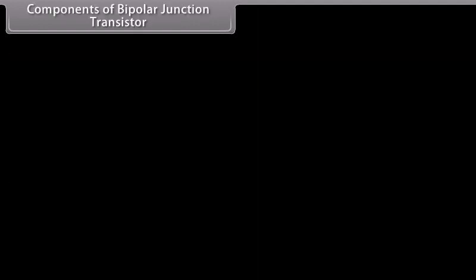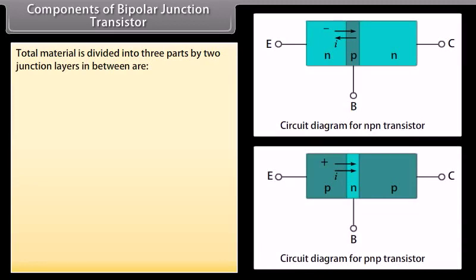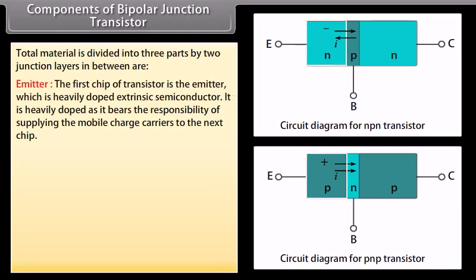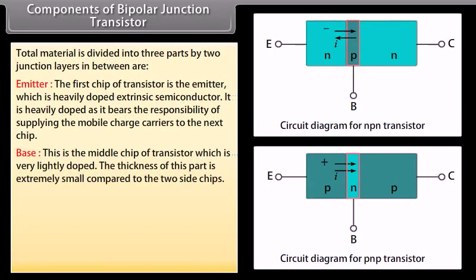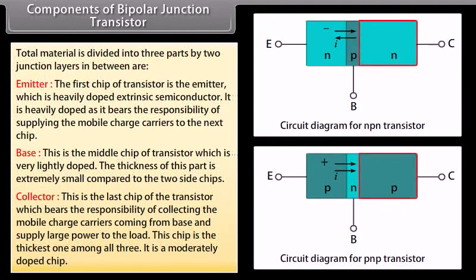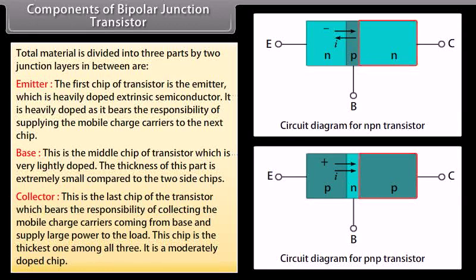Components of a bipolar junction transistor: The total material is divided into three parts by two junction layers. Emitter: The first chip, which is heavily doped extrinsic semiconductor, bears the responsibility of supplying mobile charge carriers to the next chip. Base: The middle chip, which is very lightly doped and extremely thin compared to the two side chips. Collector: The last chip, which collects the mobile charge carriers coming from the base and supplies large power to the load. It is the thickest and moderately doped chip.